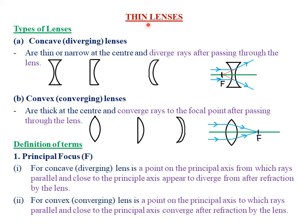Today we are looking at the first chapter of form four work, which is called thin lenses. This chapter is closely related to a certain chapter in form two work, which we looked at, called reflection at curved surfaces. Today we are going to look at the types of lenses.